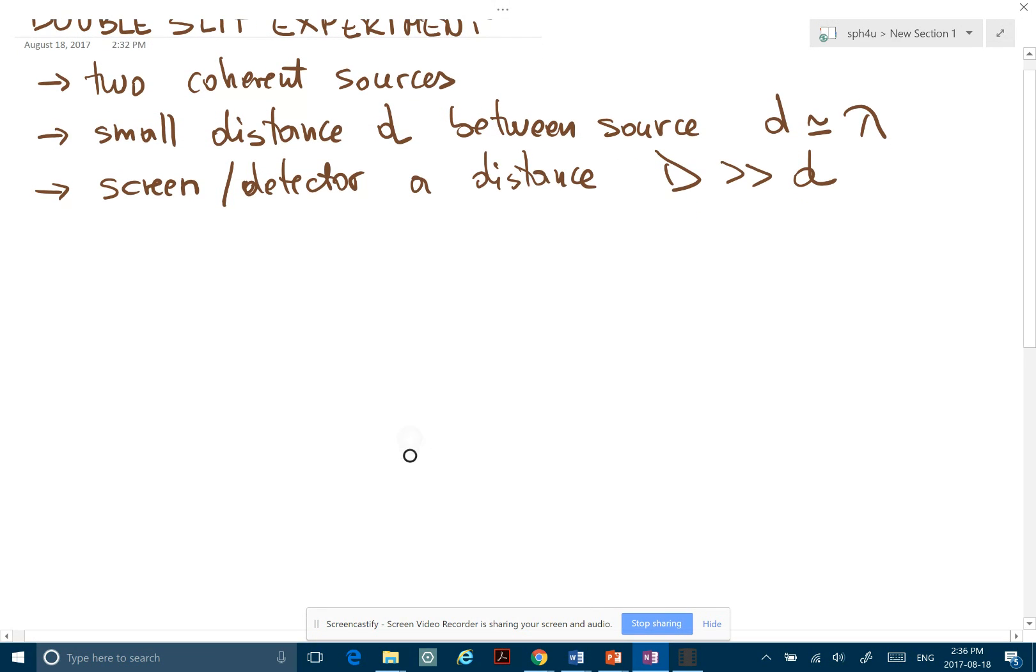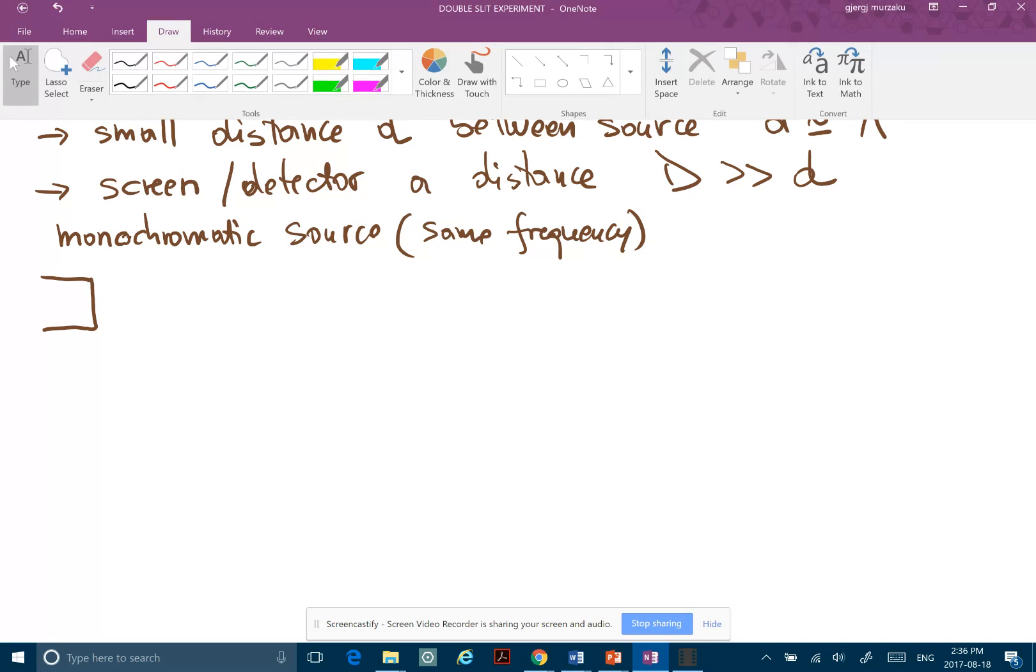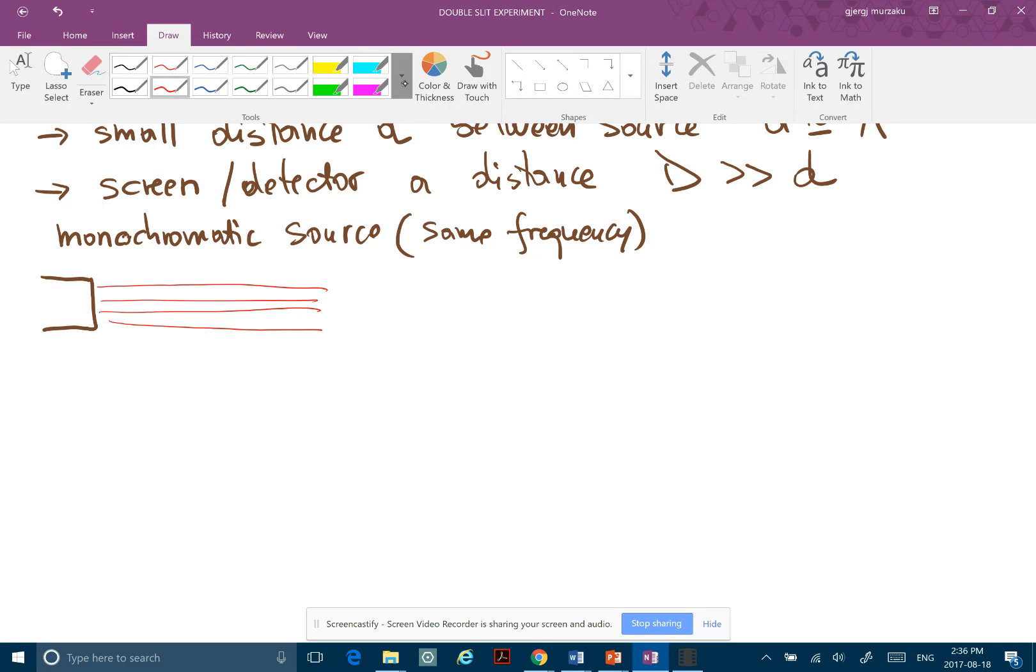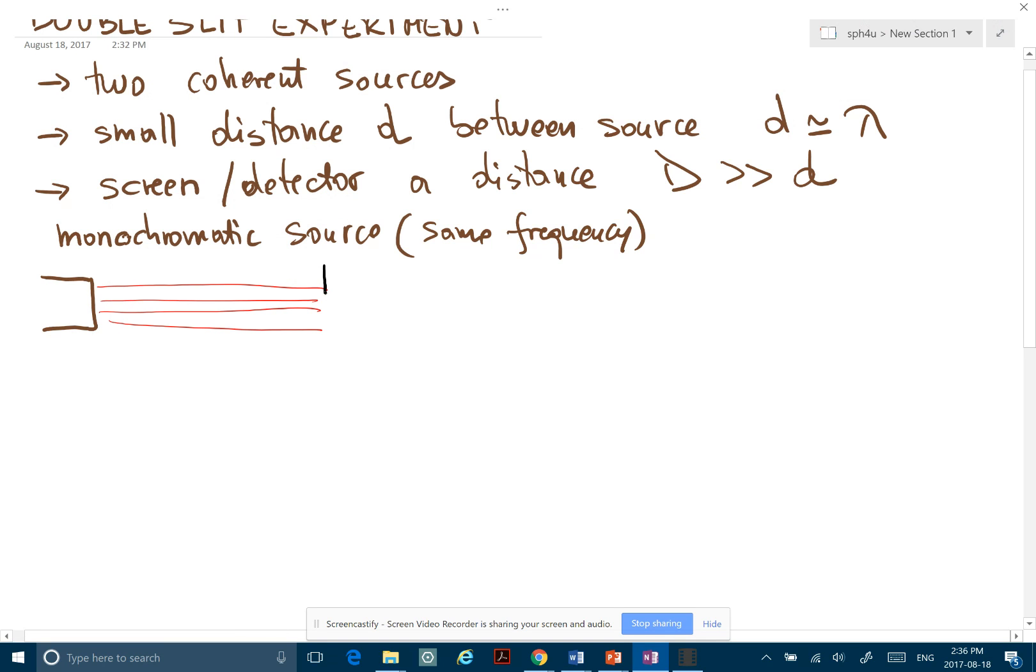So what Young did, he got a monochromatic source. What does it mean monochromatic? It means a unique frequency, the same color. Usually nowadays we use a laser. And then what he did, he put a slit in front of this source, so he put two slits, very narrow, which are a distance d between them.